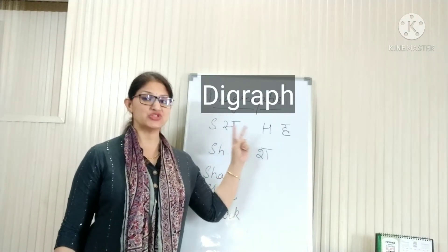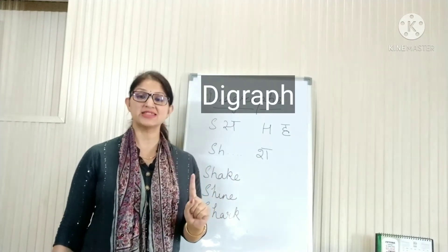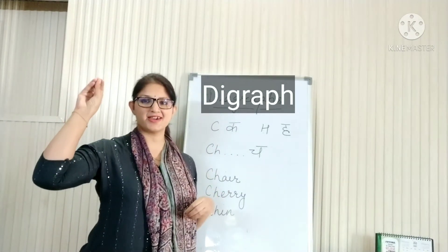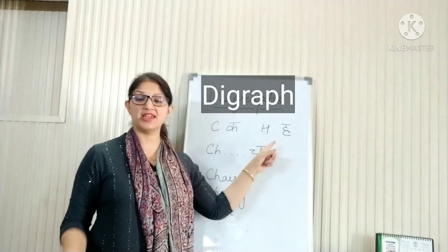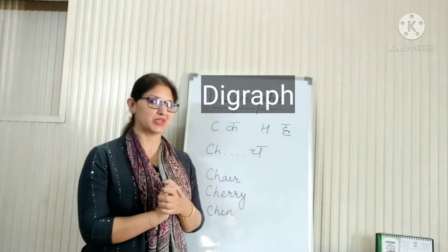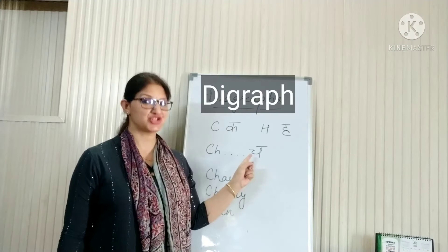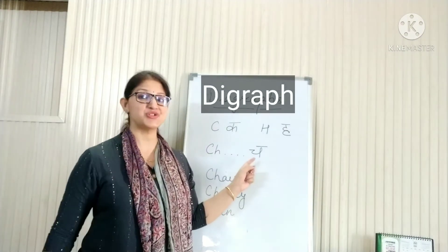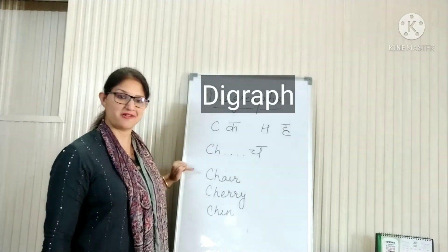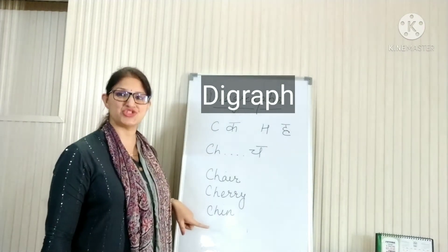Digraphs are two letters. Digraphs make one sound. For letter C, we say 'k'. For letter H, we say 'ha'. Put the letters together and they make a new sound — Ch! Can you hear the ch sound in these words? Cherry. Chin.